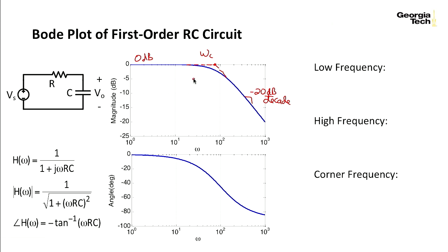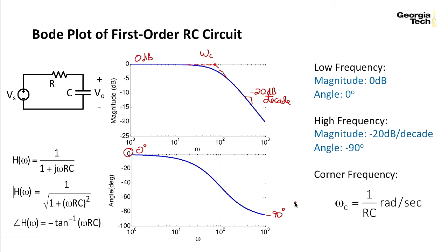I'll call it omega sub c. And in the angle plot, we start out at zero degrees, and we end up at minus 90 at high frequency. So to summarize this behavior, the magnitude at low frequency is zero decibels, the angle is zero.